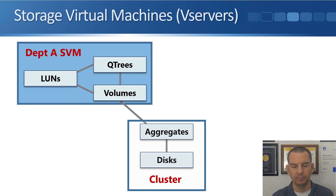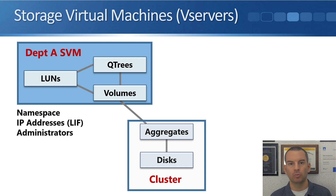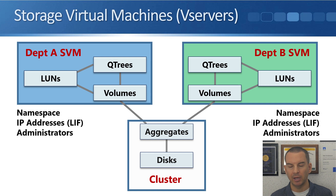At the SVM level — say for department A — the things assigned are volumes, and everything above that: Qtrees and LUNs. Also assigned at the SVM level is the namespace (the directory structure of that SVM), the IP addresses assigned at the logical interface level, and SVM-level administrators. Department B would have its own separate SVM with its own separate volumes, Qtrees, LUNs, namespace, IP addresses, and administrators.